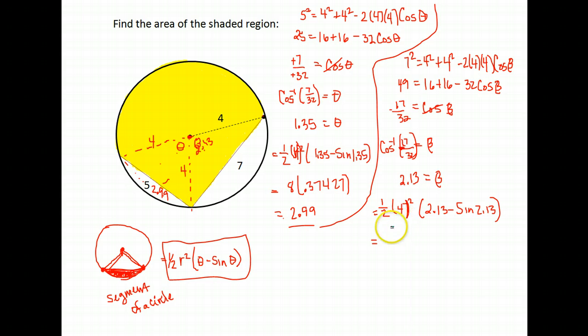All right, so 4 squared is 16 times a half gives me 8. And then for this section, 2.13 minus the sine of 2.13, I get about 1.28. But again, just leave that whole thing in your calculator and go ahead and go times 8. You should get about 10.26 if we round. So the area of this white segment, this white section here, is 10.26.